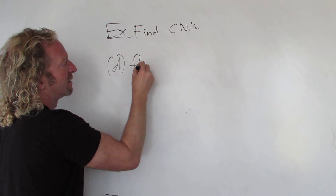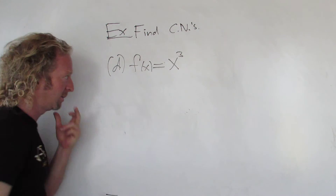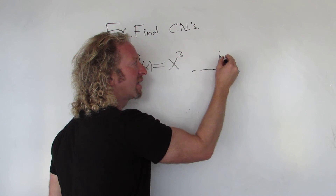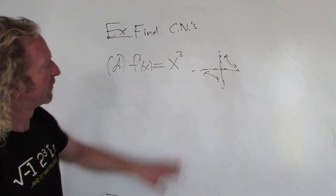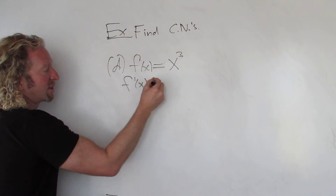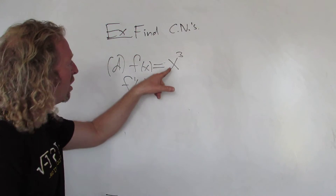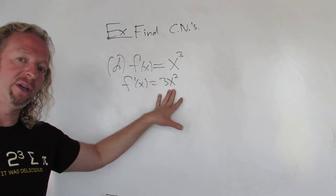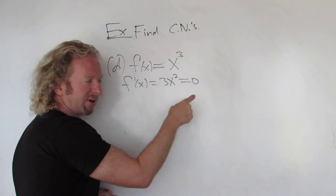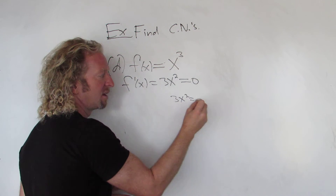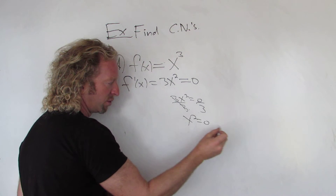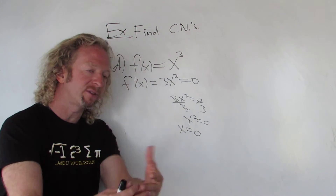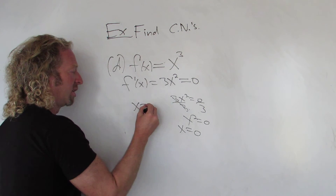Let's look at f(x) = x cubed. By the way, 1/x had a vertical asymptote at zero. For x cubed, the domain is all real numbers — it's a polynomial. The derivative is 3x squared, which is never undefined. Setting it equal to zero and solving: divide by 3, take the square root, giving x equals zero. Zero is in the domain, so x equals zero is a critical number.